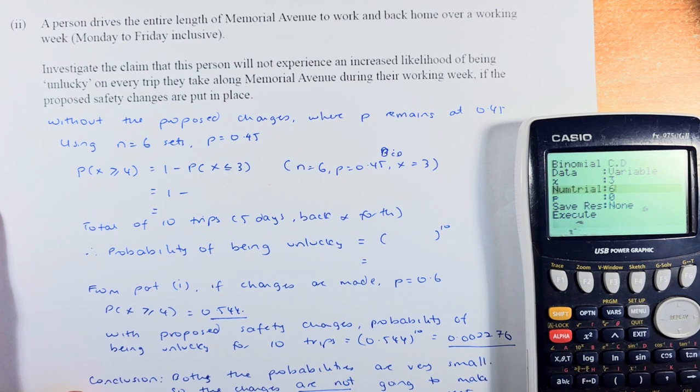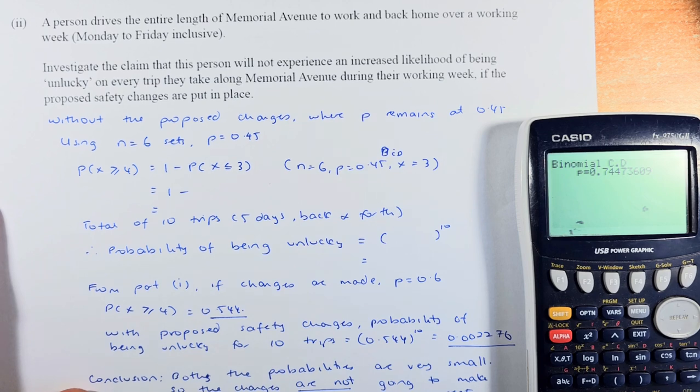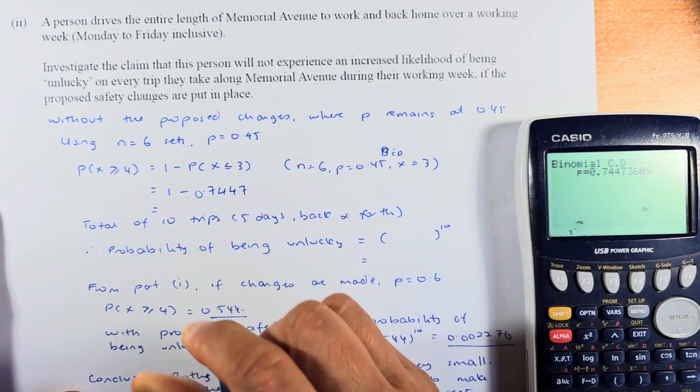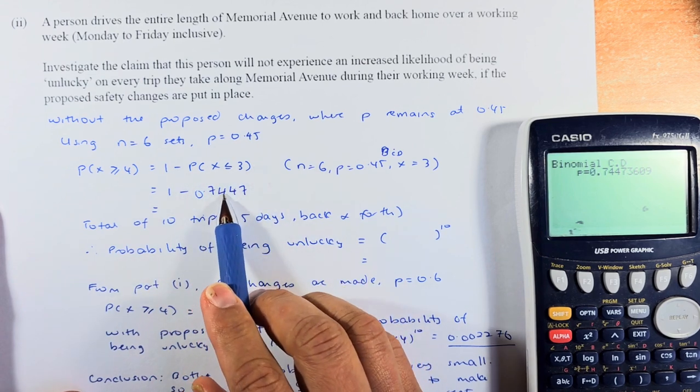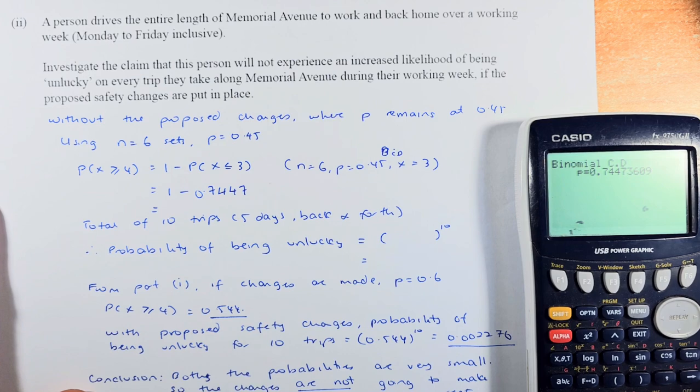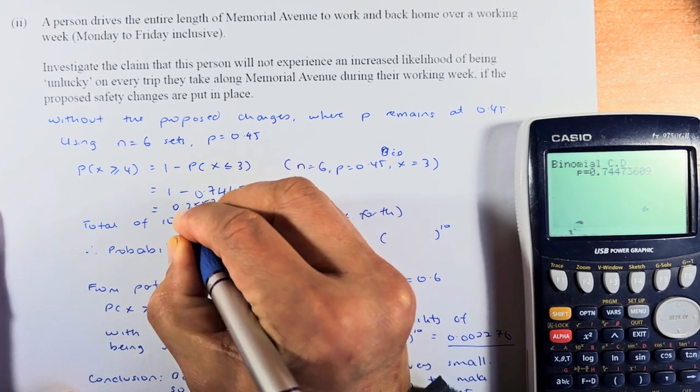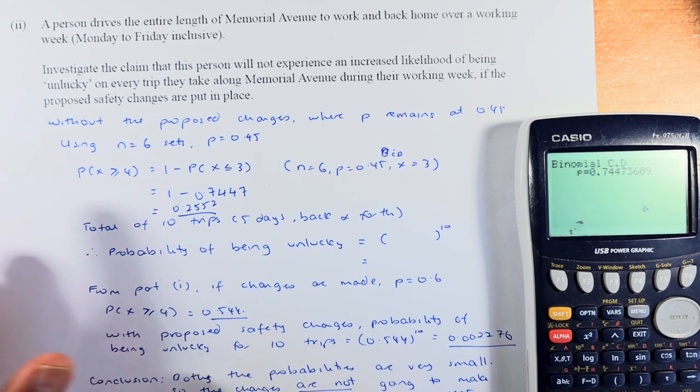Execute. Number of trial is going to be 6 sets. This time, the original amount is 0.45. Execute. And the answer is going to be 0.7447. Because we are calculating greater than 4, it takes 1 minus less than 3. So 0.7447, and the answer is going to be close to 0.2552. So that is the answer if it is greater than 4.